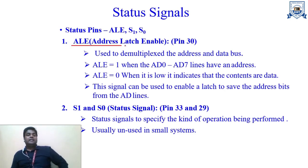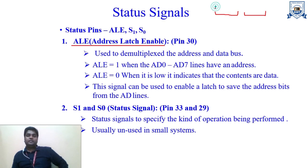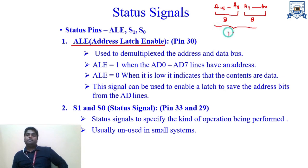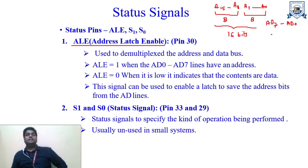If we are talking about ALE (Address Latch Enable), as we know that the 8085 address lines are basically divided into two halves — the lower half and the upper half. The upper half is A15 to A8, and the lower half is A7 to A0. These are 8 bits each, giving a total of 16 bits. The lower half 8 bits are multiplexed with the data bus also, and that is why these 8 bits are represented as AD7 to AD0, because they contain address information as well as data information.